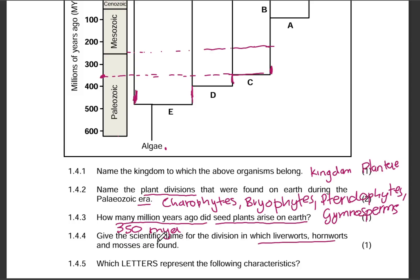Give the scientific name for the division in which liverworts, hornworts, and mosses are found. That is the first plant division learned in Grade 11 — that is Bryophytes.